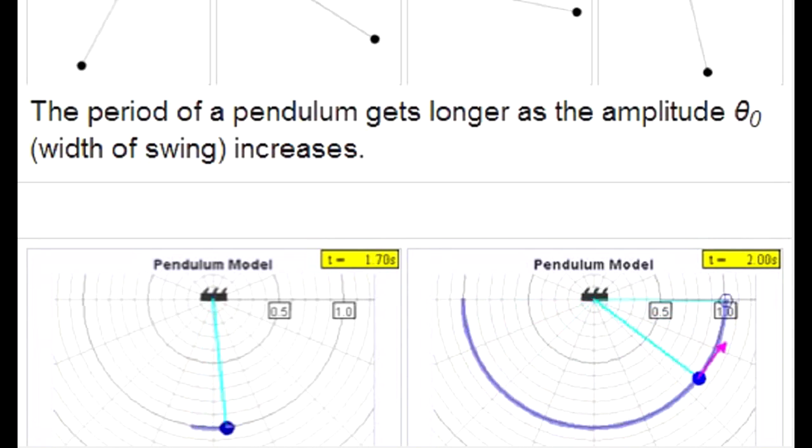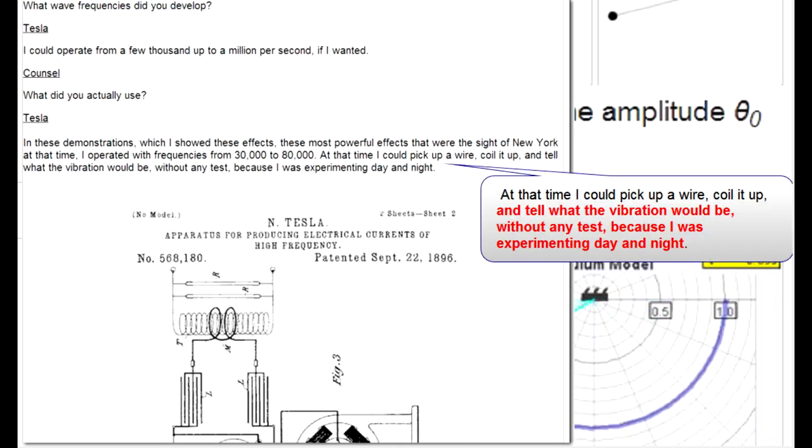John: That goes back to the turn of the previous century when Tesla was working. He claimed that he could bring down a building with this little tiny machine. People built that machine, actually hooked it up to bridges and steel structures, and found out that it didn't happen the way he thought it would. They tried it many different ways, many different designs, and it didn't work.